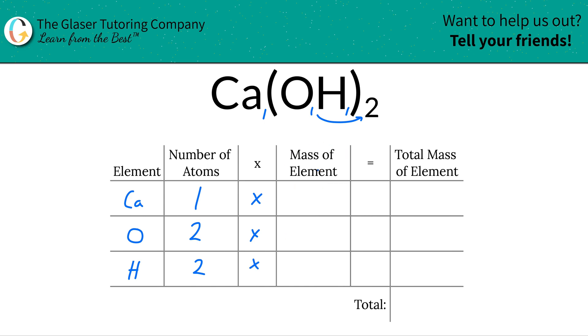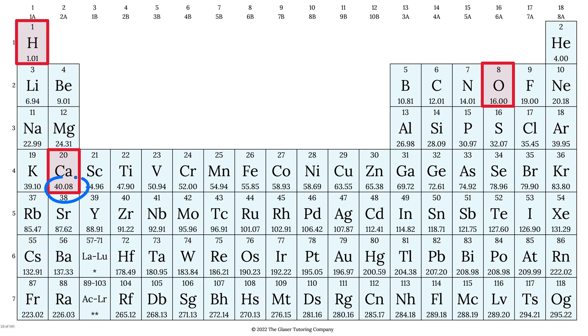Where do we find the mass of the elements? You got it. Periodic table. Let's take a look. So we've got calcium here, hydrogen, and oxygen. All right, so calcium is 40.08, hydrogen is 1.01,